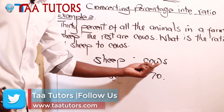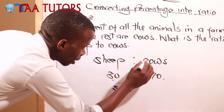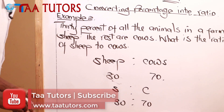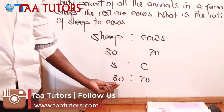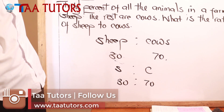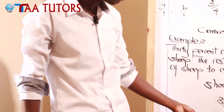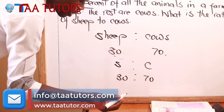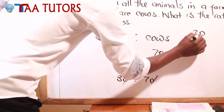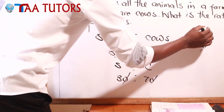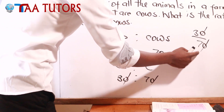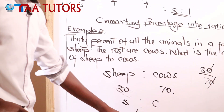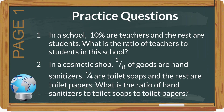Now we can get the ratio of sheep to cows: 30 percent to 70 percent. You can't leave your answer like this — you must simplify. Cancelling the zeros, this is just like 30 over 70. Simplifying gives us three to seven. So our final answer is three to seven. That is the end of our lesson today.